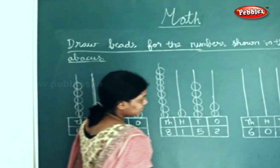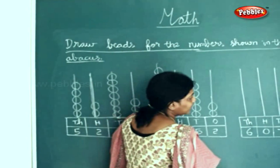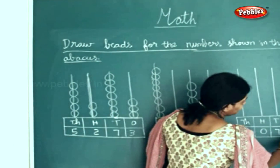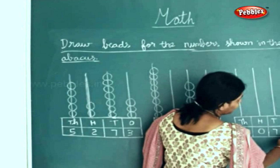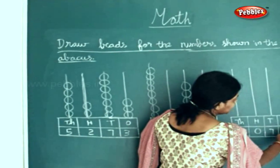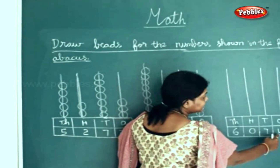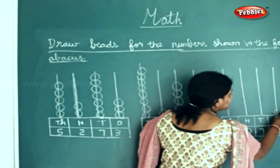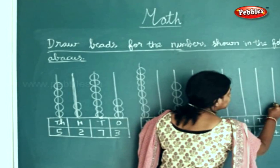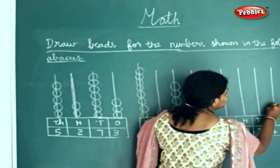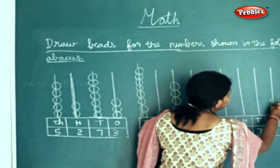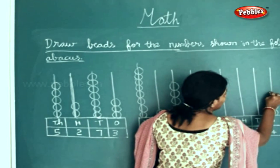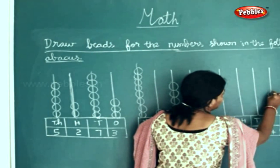Now the next sum. How many do you find in the 1s place? 4. So how many beads will you draw? You will draw 4 beads: 1, 2, 3, 4.